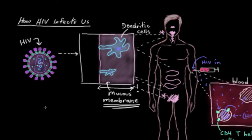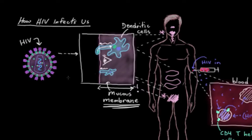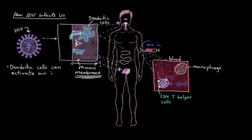Dendritic cells are really quite key in HIV infection. What they do is they protrude their little limbs essentially up to the surface of our mucous membranes, because their job is to sort of sample the environment — to look for bacteria, viruses, or any other threats to our health. They continually grab onto particles that they find sitting on top of our membranes and pull them in across the membrane to check them out. They actually have the ability to kick off a pretty big immune reaction, depending on what kind of particle they've found.